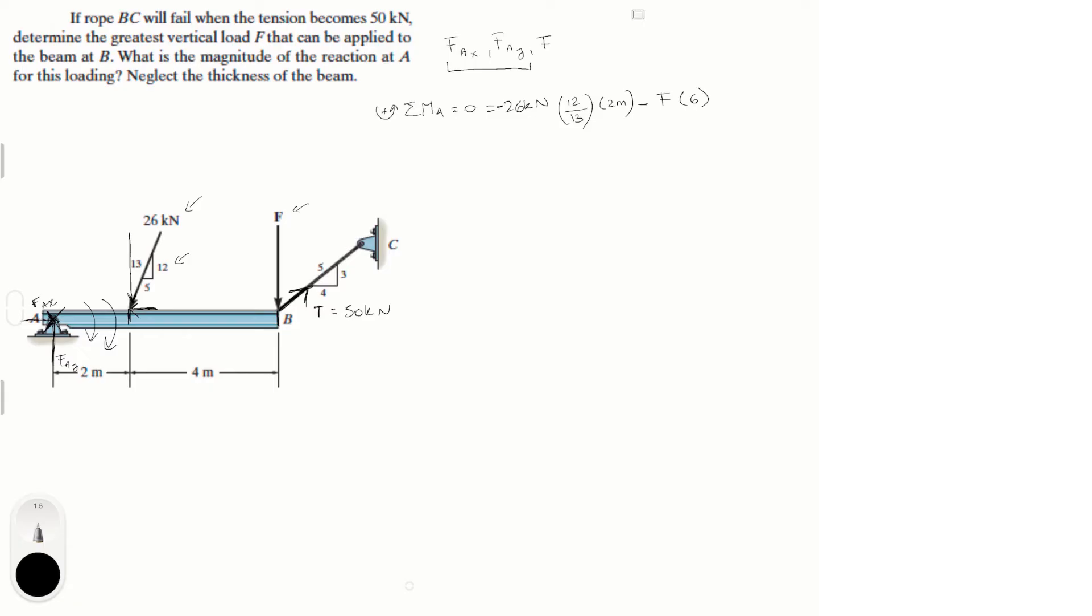And then we have the 50 kN tension, which has two components, a component going up and a component going to the right. Only the component going up is generating a moment, and that component is given by 50 kN times 3 over 5. And then you have to multiply it by what the point that it is applied, which is the same as before, which is 6. And it's positive because it's trying to turn the structure that way.